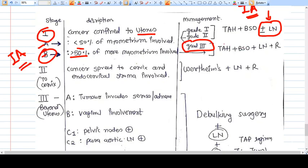And R means radiotherapy. You will also go for radiotherapy if more than 50 percent of myometrium is involved.